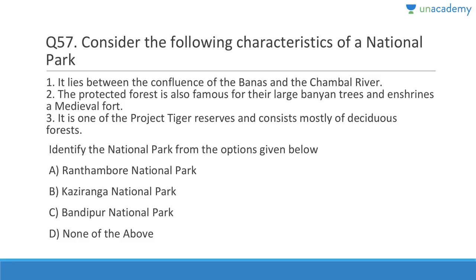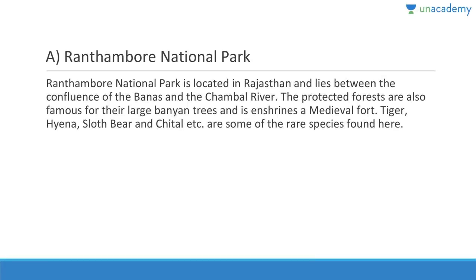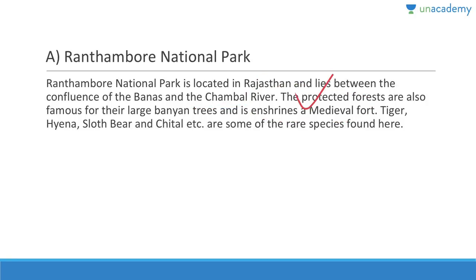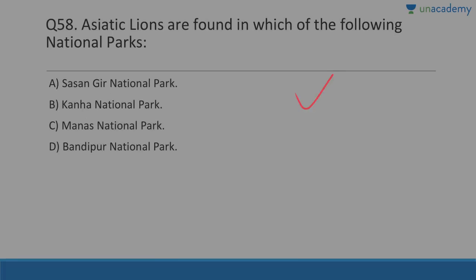Question 57: Identify the national park — it lies between the confluence of the Banas and Chambal rivers, is famous for large banyan trees, enshrines a medieval fort, is one of the Project Tiger reserves, and consists mostly of deciduous forest. Answer is Ranthambore National Park, located in Sawai Madhopur district of Rajasthan. It has tiger, hyena, sloth bear, and chital among the species found there.